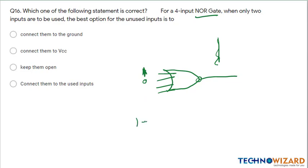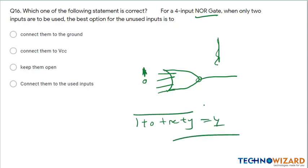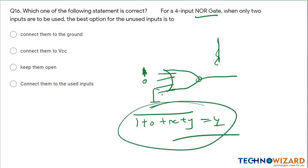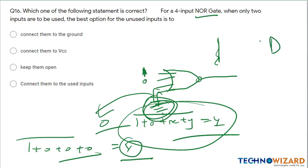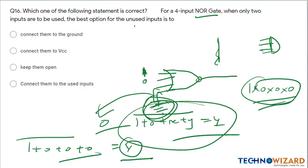In a NOR gate, the expression is (1 + 0 + x + y) with a bar — we get the output. If we ground both unused terms, they become 0: (1 + 0 + 0 + 0) — there will be no effect on the output and we will get the correct answer. Note that for a NAND gate we cannot connect them to ground because the AND operation would make all terms zero. Here for the NOR gate, we can connect the unused inputs to ground. Therefore option A is the correct answer.